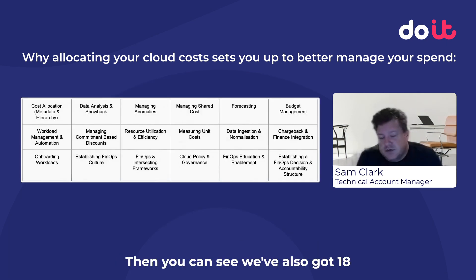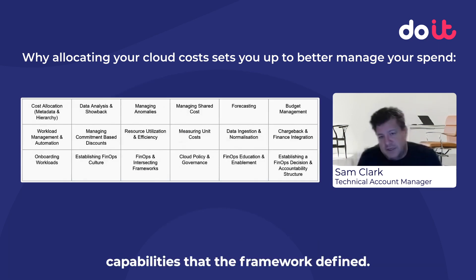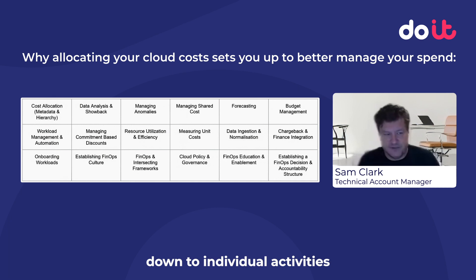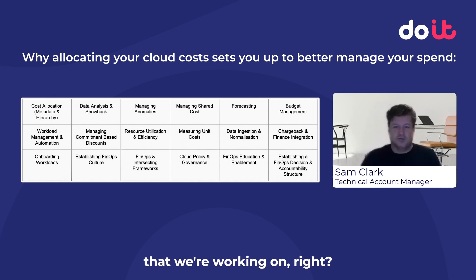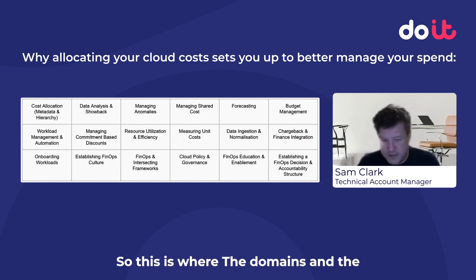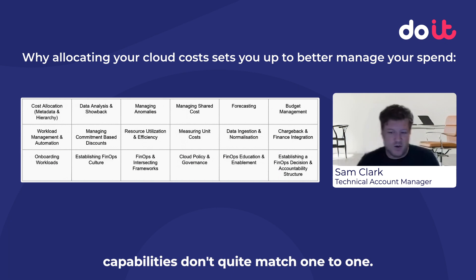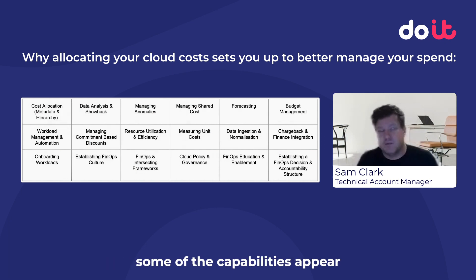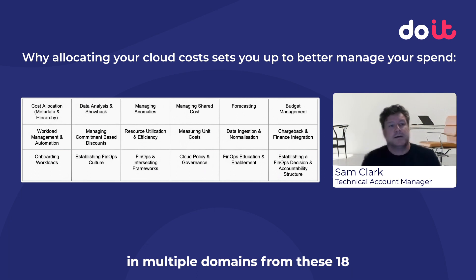We've also got 18 capabilities that the framework defines. The capabilities are really down to individual activities that we're working on. This is where the domains and the capabilities don't quite match one-to-one — some of the capabilities appear in multiple domains.